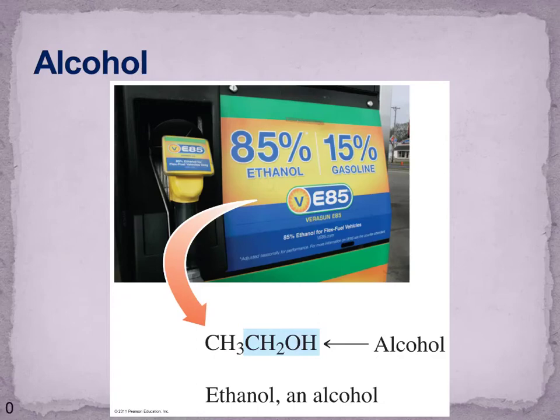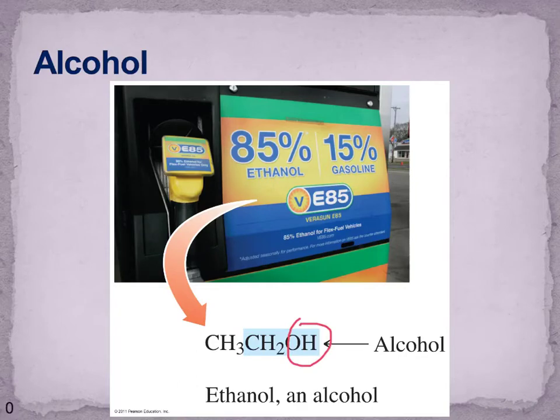We talked a little bit about functional groups in an earlier chapter when we introduced organic molecules, but we're going to come back to that and do this with several of the functional groups as we go through the rest of the course. Now we're going to talk a little bit more about alcohols. At that point we were just worried about you knowing that an alcohol is an OH group, and we're going to look at some more of the characteristics involved. The basic definition of an alcohol is that it does have that OH group, and it's going to depend on where it's attached — what kind of alcohol it is.